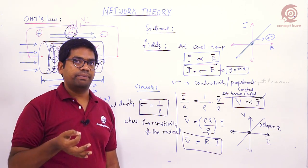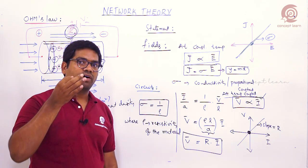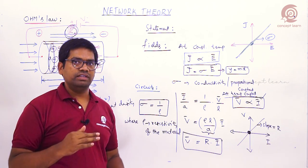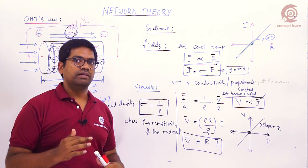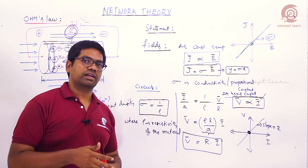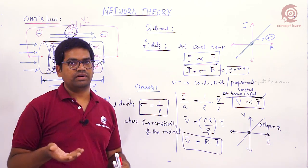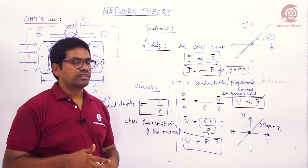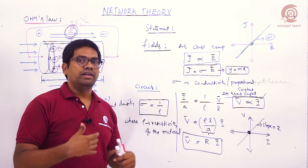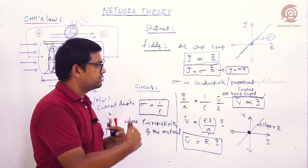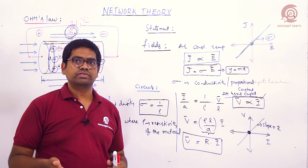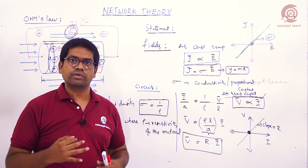At constant temperature, there exists a linear relation between current density and electric field, and between voltage and current. If temperature is not constant, this linear relationship no longer holds. We use this same relation for circuit elements such as resistance, inductor, and capacitor.